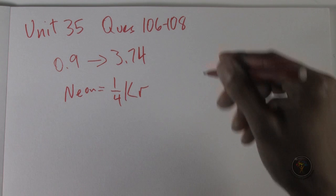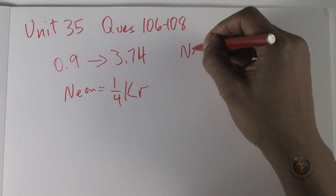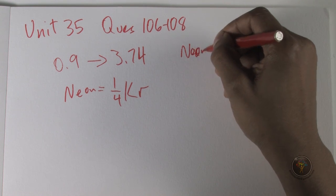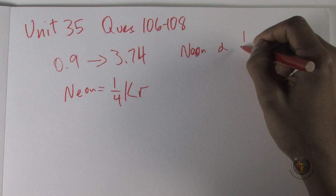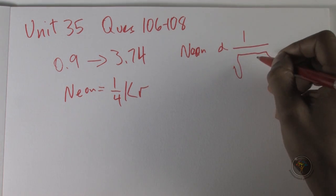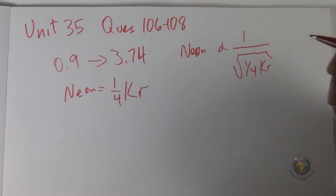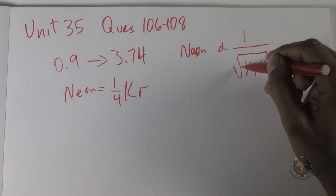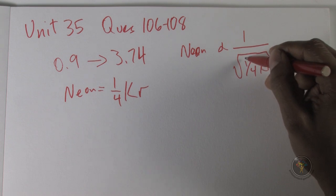That's the easy way to do it. You can always write that the rate for neon is going to be proportional to one over the square root of one quarter krypton.